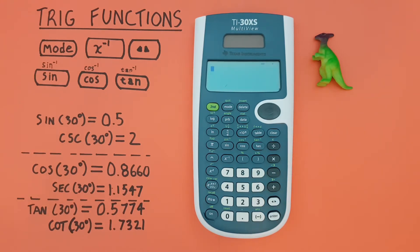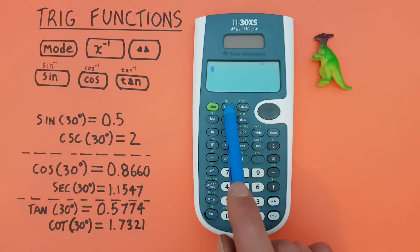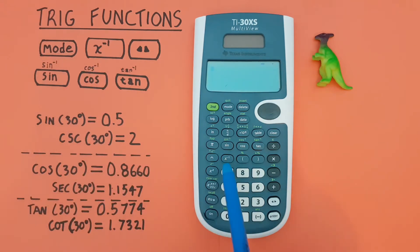To do this we'll be using the mode key, looks like this, located here. The inverse key, looks like this, located here. The toggle key that changes our answers from fractions to decimals, that looks like this, located down here.